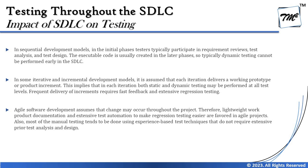In some iterative and incremental models — such as the spiral model and prototype model — each iteration delivers a working prototype or product increment. This means both static and dynamic testing may be performed at all levels within each iteration. Frequent deliveries of increments require fast feedback and extensive regression testing, as the customer confirms each prototype before the team moves to the next level.